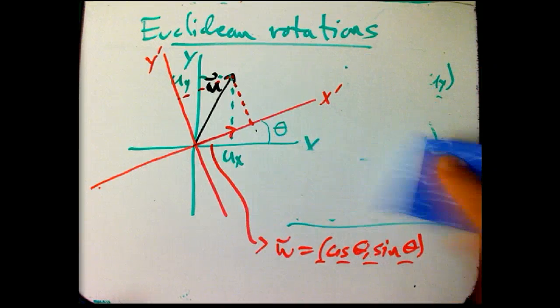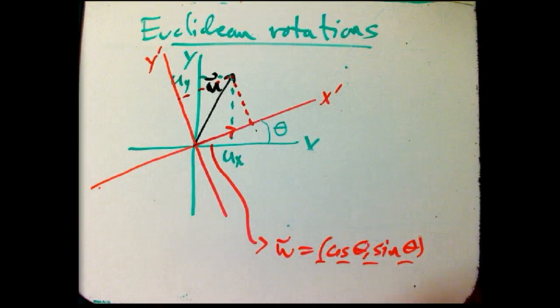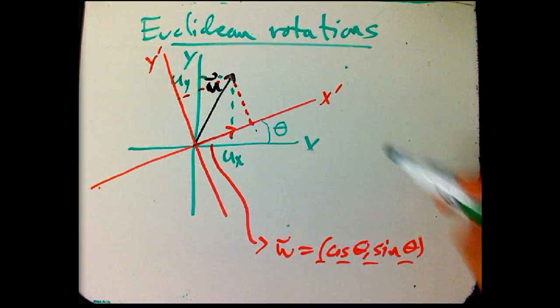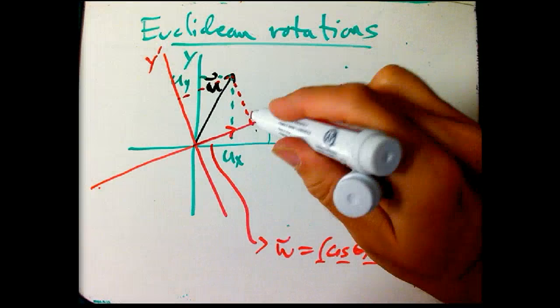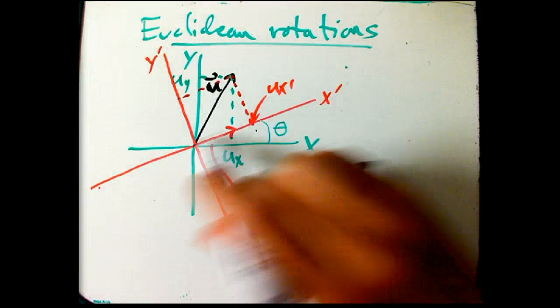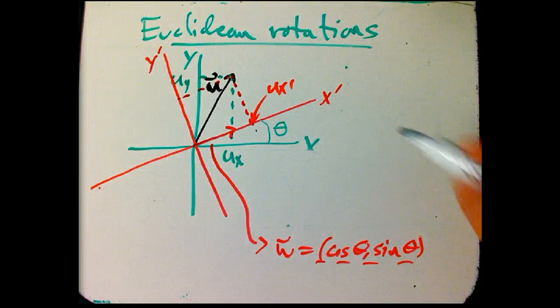So, let me leave the picture. Take this away. And so, we know that the UX here, we want U, sorry, UX prime, is exactly just this projection. It's the scalar part of that projection.